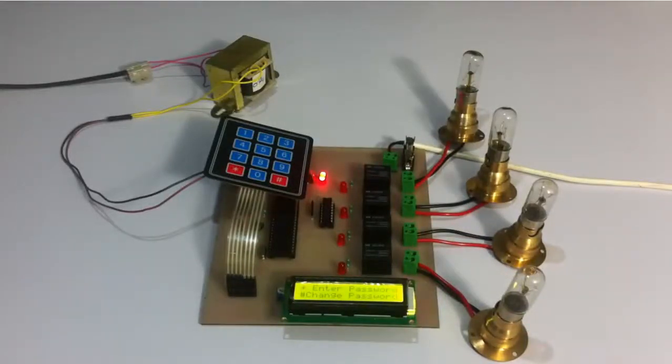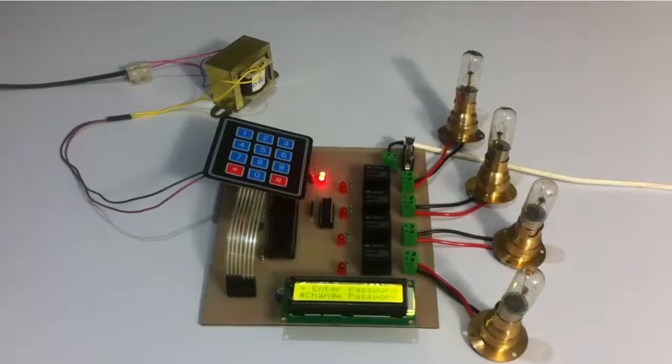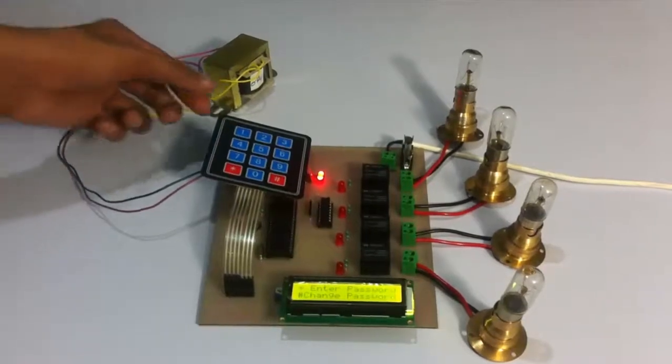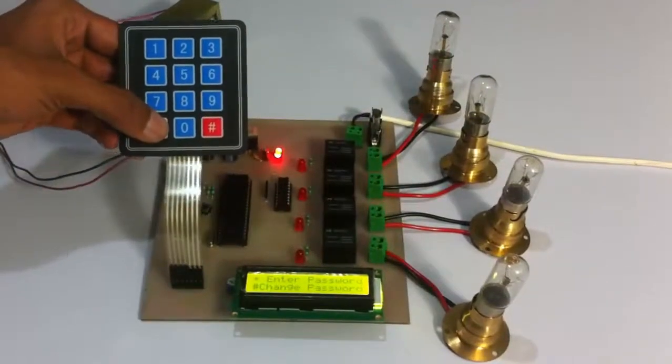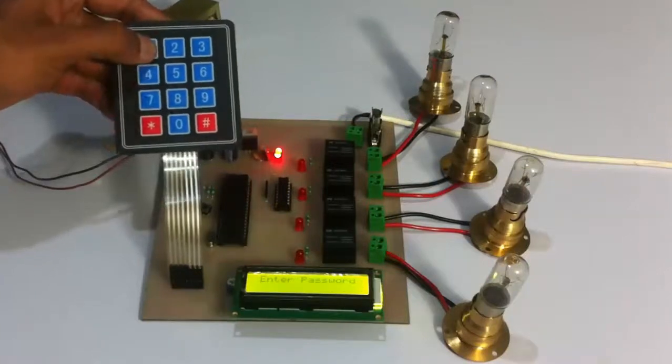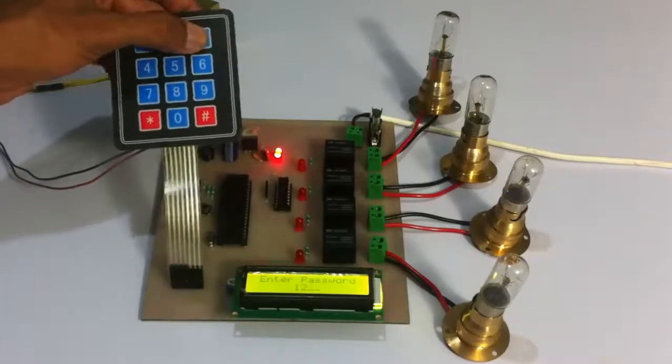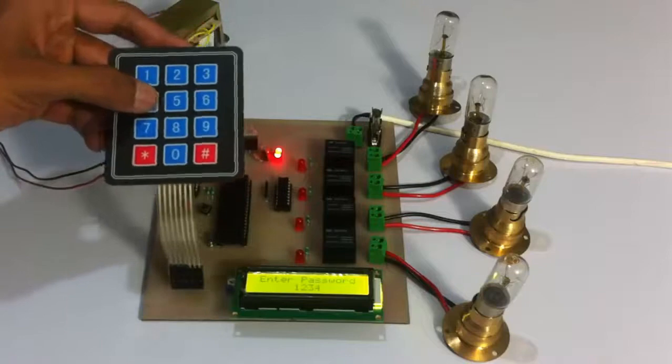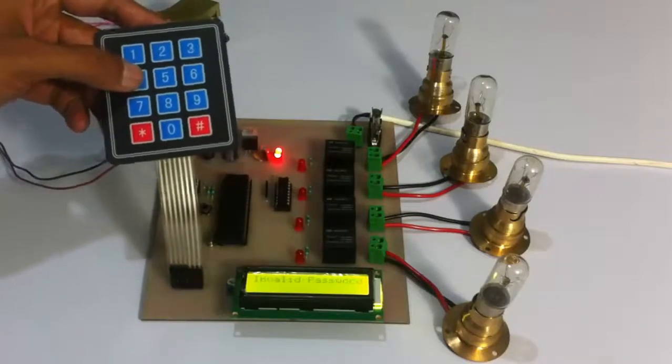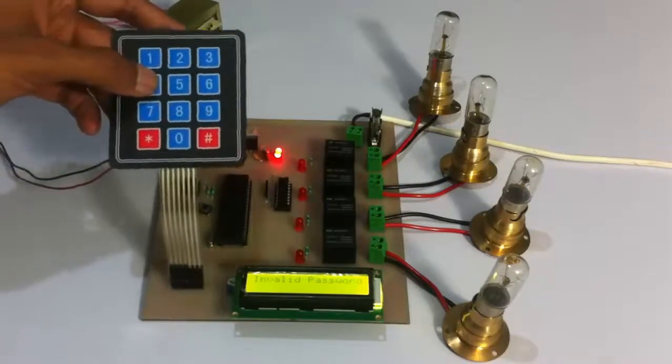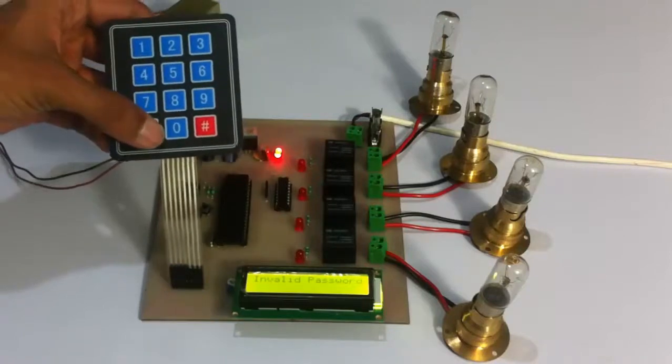The system is now running, so let's operate it using the keypad. Suppose someone else tries to access the system. Let's enter the wrong password. So we have entered the wrong password, so it says incorrect password. This is how any unwanted user cannot access the system.